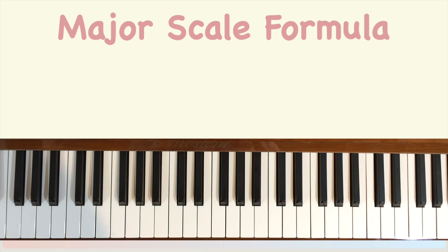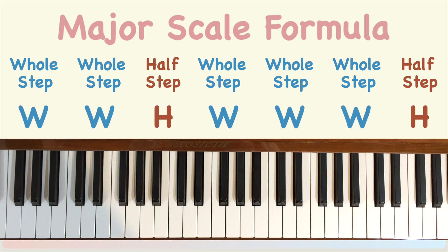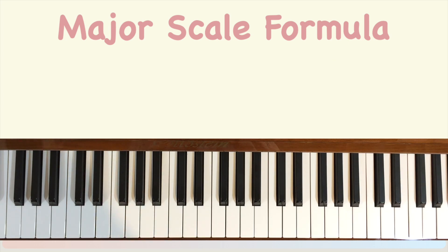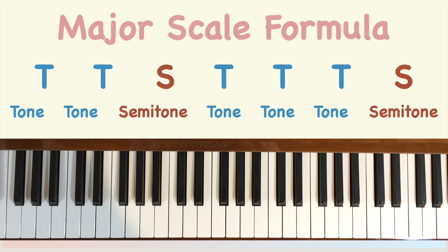The major scale formula is: whole step, whole step, half step, whole step, whole step, whole step, half step — or WWHWWWH. Another way of writing the major scale formula is TTS TTTS, where T stands for tone and S refers to semitone.